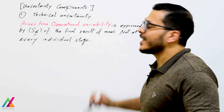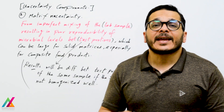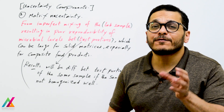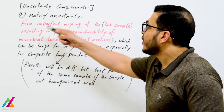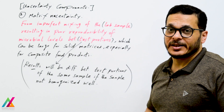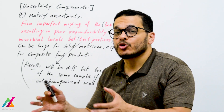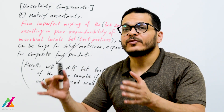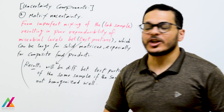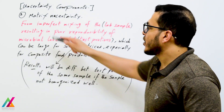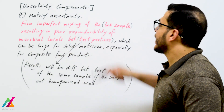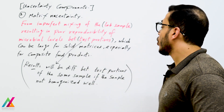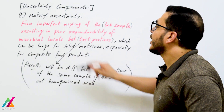Technical uncertainty arises from operational variability — any variation during the whole measurement process over a long time scale — and is expressed by the standard deviation of reproducibility of the final result of measurement, not at every individual stage. The second important type is matrix uncertainty, which arises from imperfect mixing of the lab sample when you prepare test portions from it.